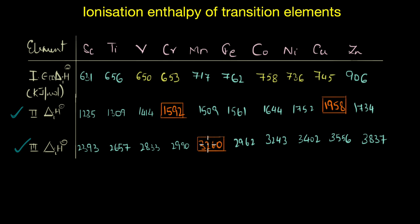Keeping that in mind, pause the video and try to find out the answer. So as I said, it all comes down to the electronic configuration. Now if you look at chromium, we know that the electronic configuration of chromium is argon 3d5 4s1.